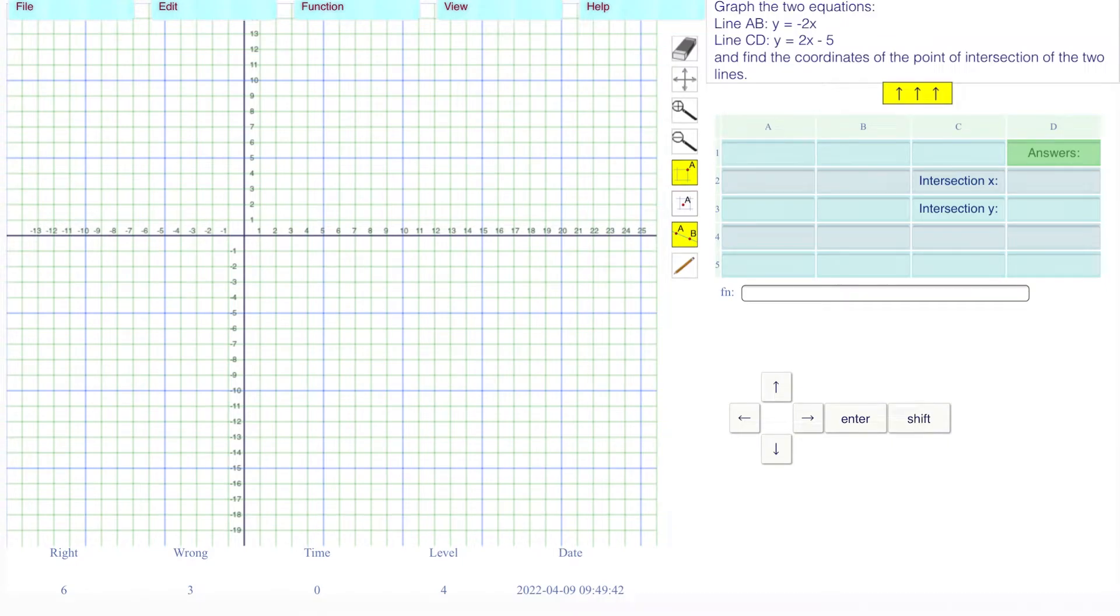To graph the two equations, y is equal to negative 2x. The b value is 0, I'm just going to go through the origin here. The slope is negative 2, that means negative 2 over 1. The delta x is 1, the delta y is down 2, like that.